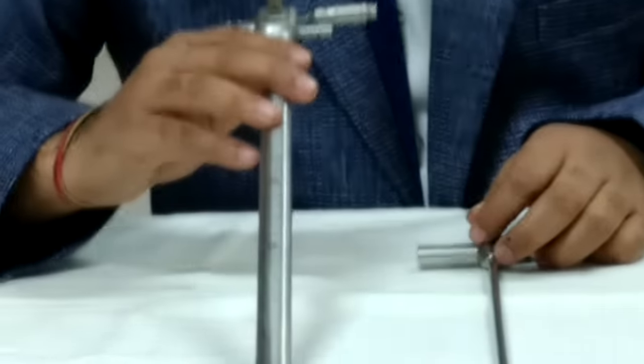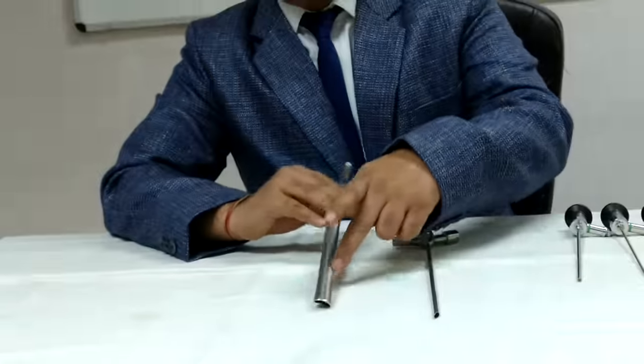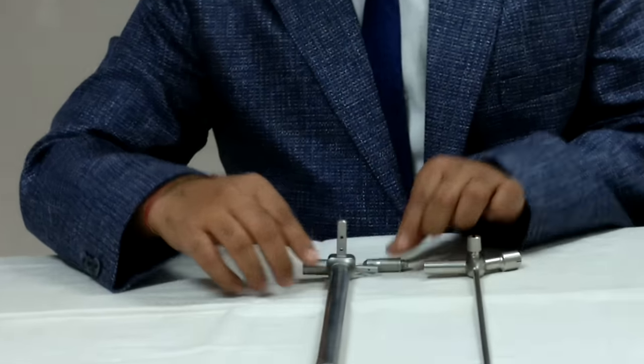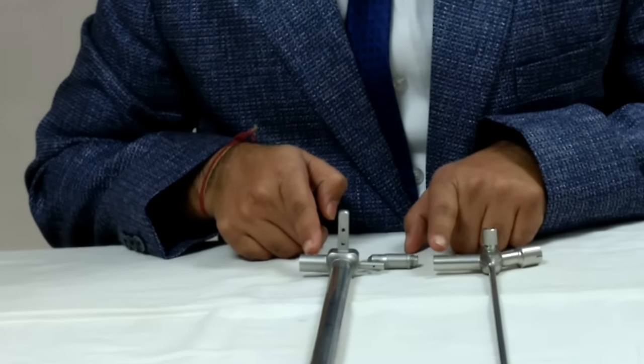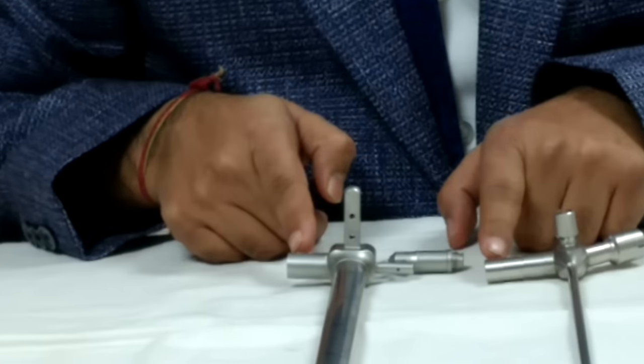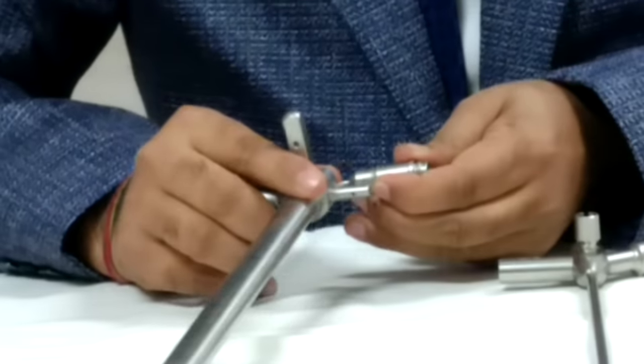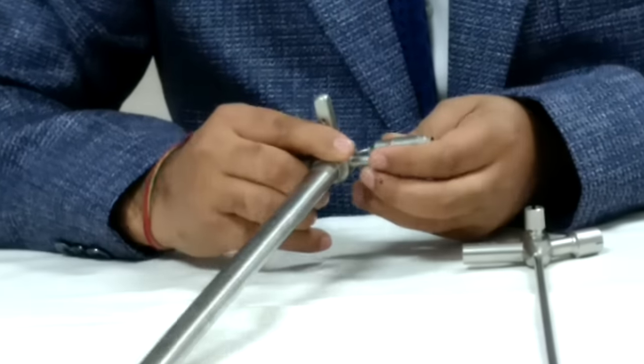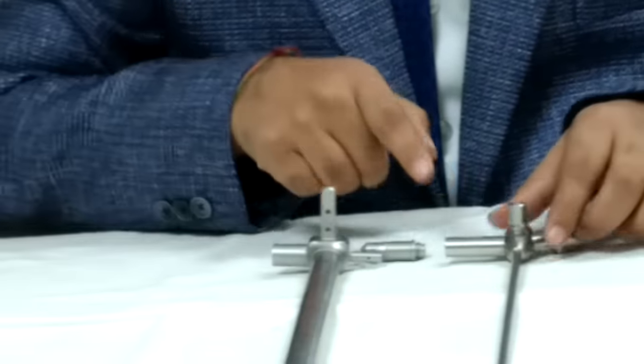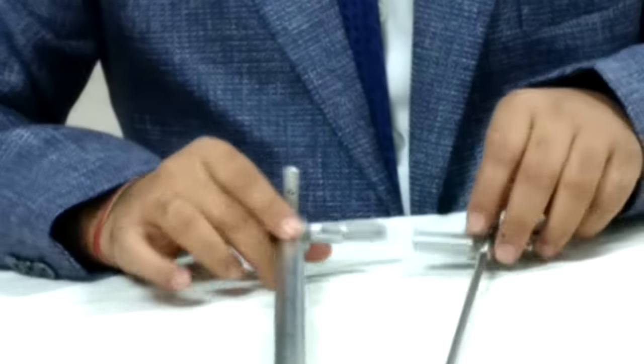This thing is not needed in esophagoscope, hence there are no vents in esophagoscope. You can see, both are having vents for light source. This is additionally having a light carrier, like how we saw in laryngoscope. Otherwise, these are an instrument.